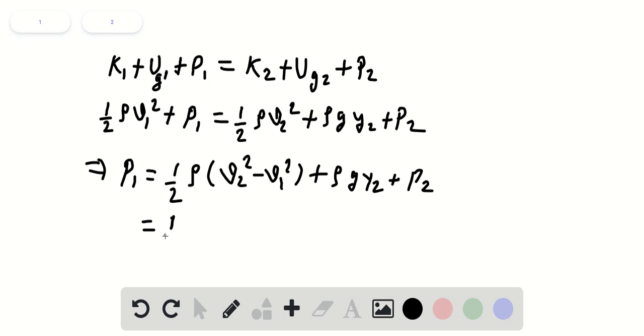So 1 by 2, rho for water is 1,000 kg per meter cubed. So that is 1,000 kg per meter cubed in standard units. And V2 squared was 6 meter per second, that was the desired speed.